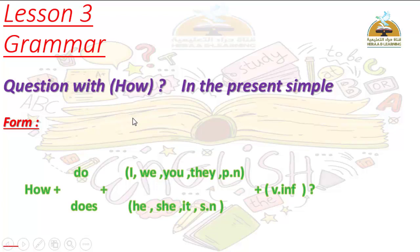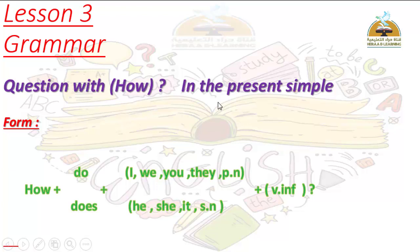What's the meaning of How? How means كيفة — it means 'how' or 'in what way.' We will use the question with How in the present simple. The form starts with How, then Do or Does as the helping verb, because this is present simple.